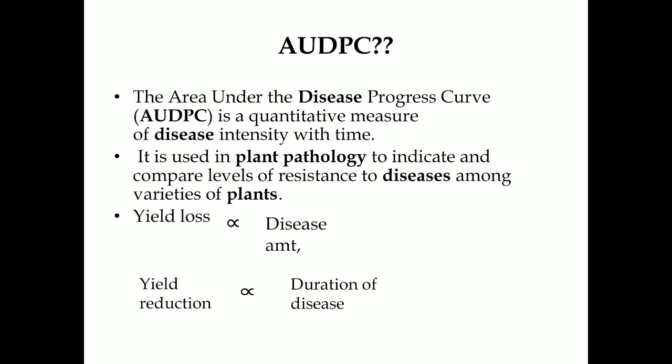What is AUDPC? AUDPC stands for Area Under the Disease Progress Curve. It is a quantitative measure of disease intensity with time, and it is used to compare disease resistance among different varieties of plants. If disease is more, then yield loss is more. And if disease remains for a longer period of time, then subsequently yield will be reduced due to this direct relationship.